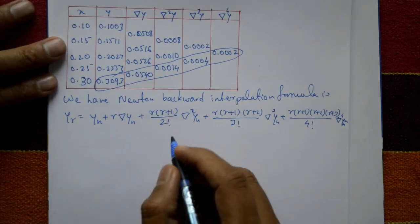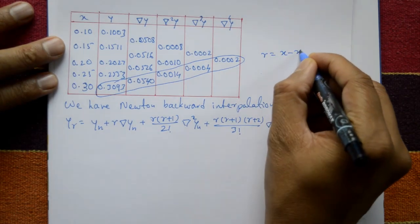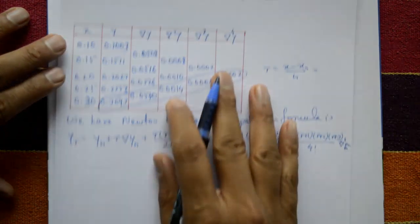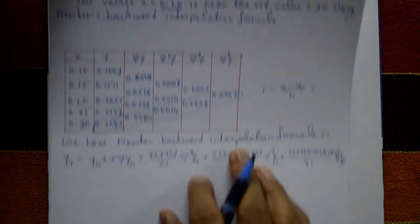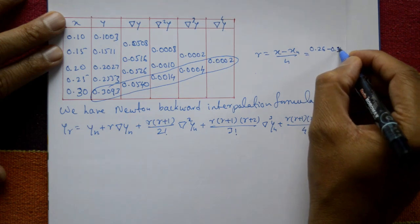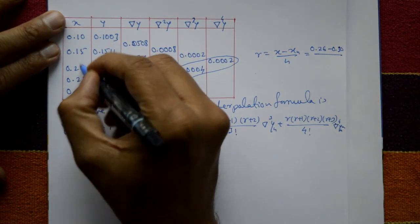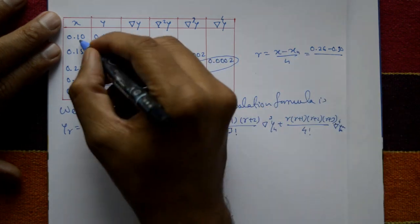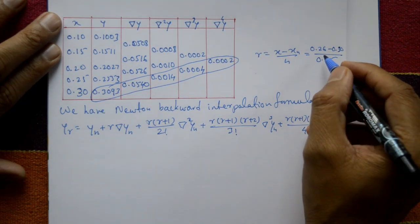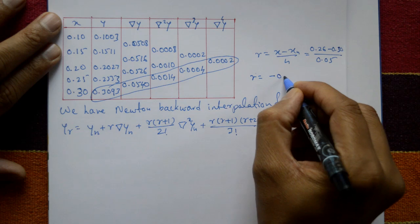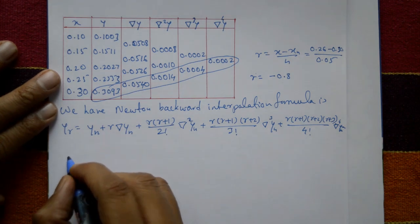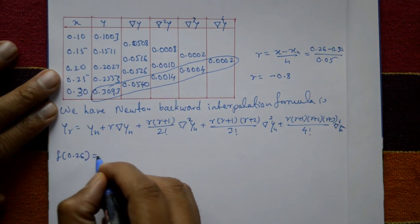Now we find r. r = (x − x_n) / h. Here x = 0.26, x_n = 0.30, and the step size h = 0.05 (equidistant spacing). Therefore r = (0.26 − 0.30) / 0.05 = −0.8.